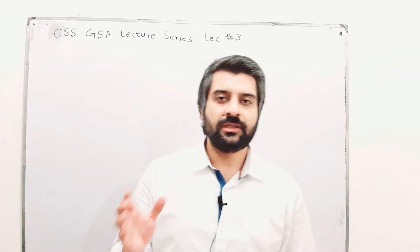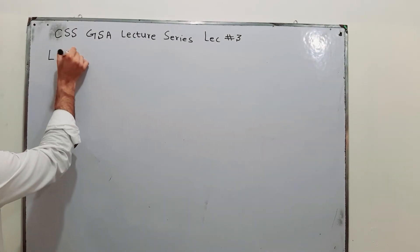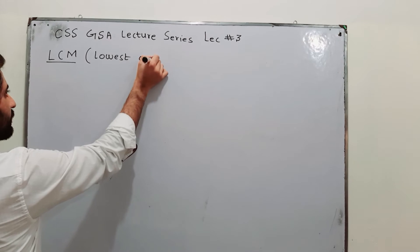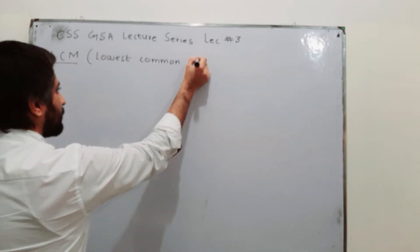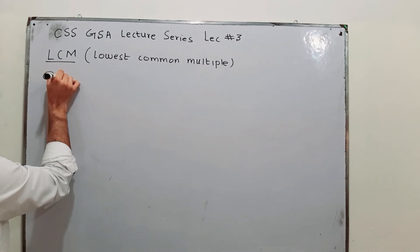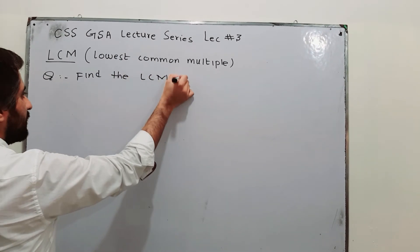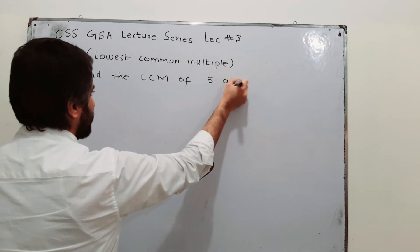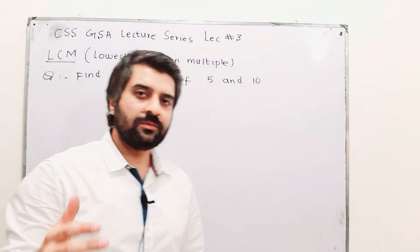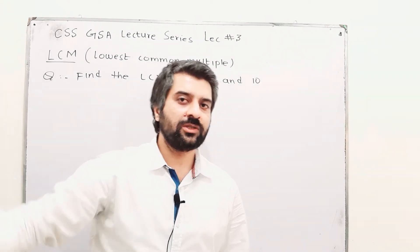Lowest common multiple — basically, if you have two numbers, I am just writing down here LCM, that is lowest common multiple. If you have two numbers, for example, find the LCM of 5 and 10. We have two numbers 5 and 10. The concept of LCM is to write down the multiples of 5 and the multiples of 10.